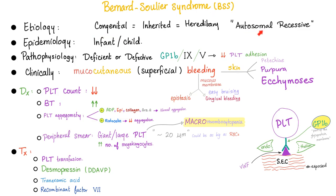Here is everything you need to know about Bernard-Soulier syndrome. It's congenital, autosomal recessive, presenting in an infant or child. There is a problem with GP1B, therefore a problem with platelet adhesion. You have mucocutaneous bleeding, platelet count is low, and bleeding time is high. Platelet aggregometry is normal with ADP, epinephrine, collagen, and arachidonic acid.